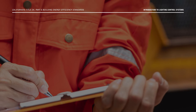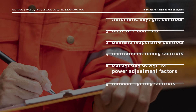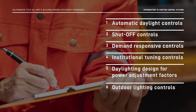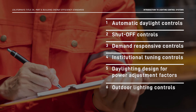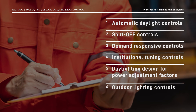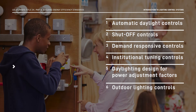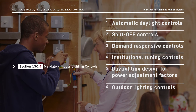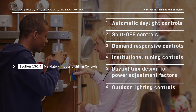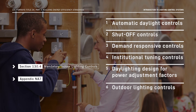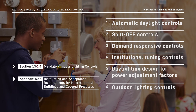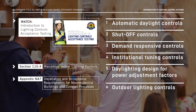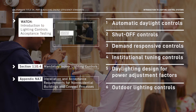Lastly, the energy code requires that automatic controls undergo acceptance testing after installation and before an occupancy permit is issued. You can find more on acceptance test requirements in Section 130.4 of the energy code and non-residential reference appendix 7, as well as our Introduction to Lighting Controls acceptance testing video.